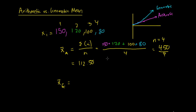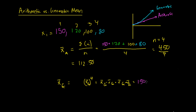Then we get our geometric mean, and it's a little different. Conceptually, if we had a number x and we multiplied it by itself four times — x to the power of four — that's essentially the geometric mean. So if we take the geometric mean x̄_g and multiply it together four times, this would be equal to all of these numbers here multiplied together: 150 × 120 × 100 × 80. If we had some average number multiplied together four times, it would equal all these numbers multiplied together.